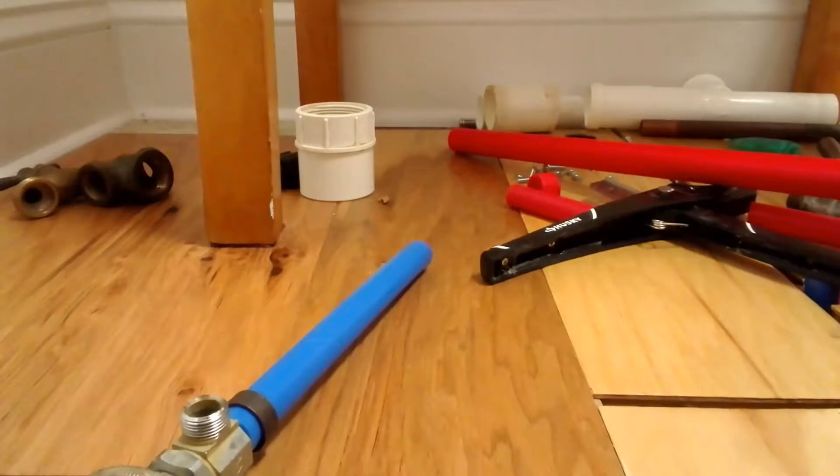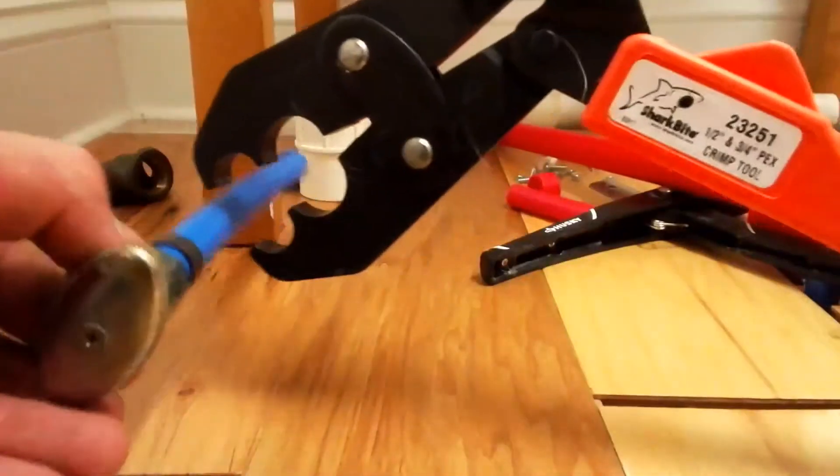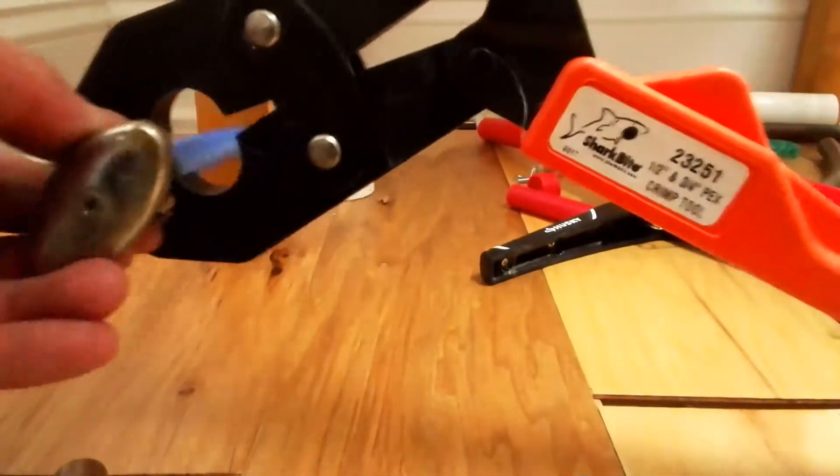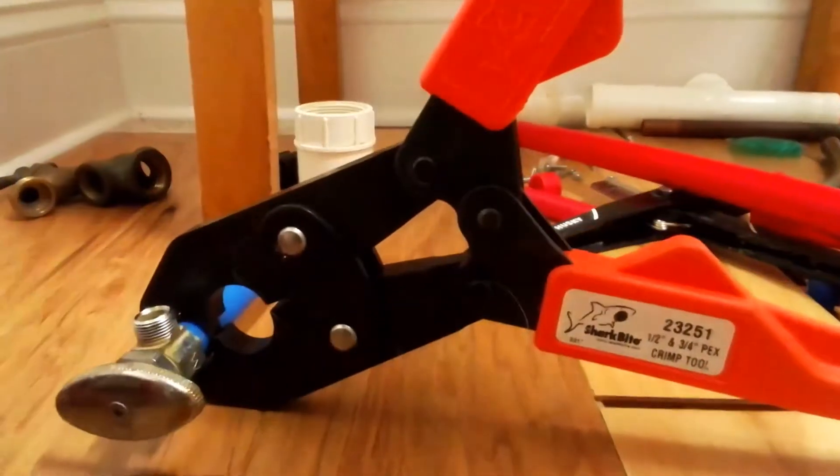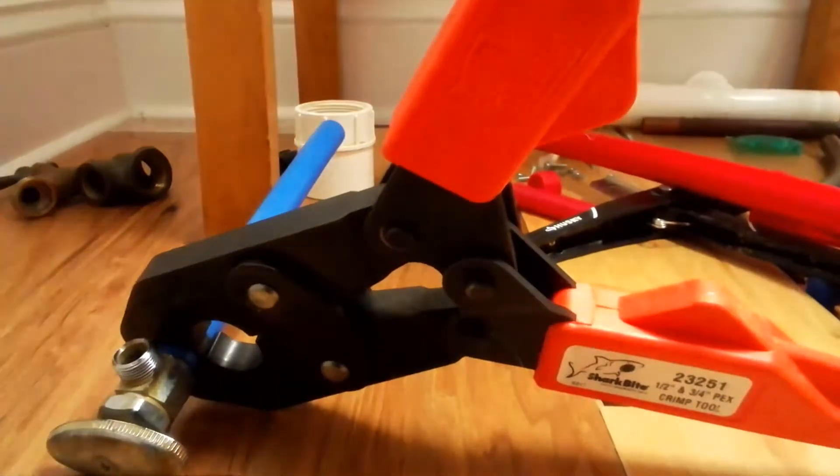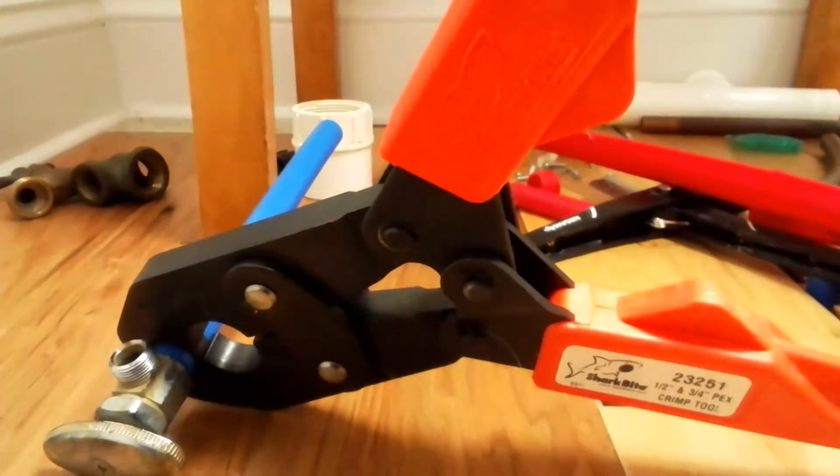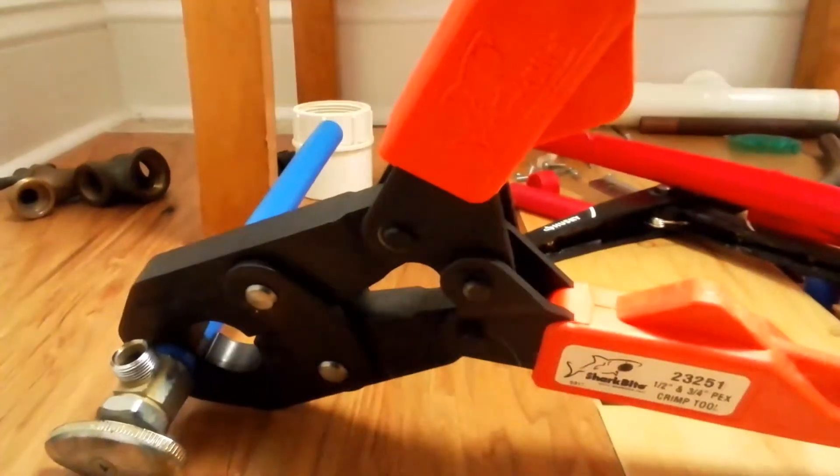Now what you're going to do is take your crimper and you want to line it up. Let me go get that go or no go tool. Let me show you that too. There's a thing I didn't think. Now I'll have to show you later because I don't have it.